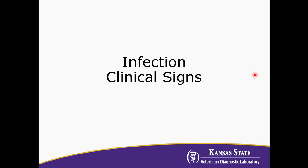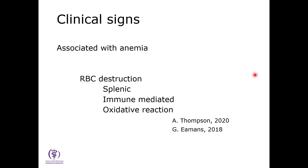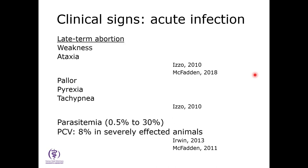Let's talk about infection and clinical signs, starting with clinical signs first. It's associated with anemia and red blood cell destruction. Just like Anaplasma, the spleen is removing infected red blood cells because it recognizes them as abnormal. However, some research suggests that doesn't explain all the red blood cell destruction — some researchers found that both infected and non-infected red blood cells in the same animal had shortened lifespans, suggesting the immune system may be clearing all red blood cells. There's also one paper proposing an oxidative reaction in conjunction with splenic clearance causing destruction.